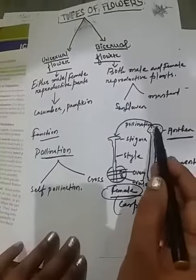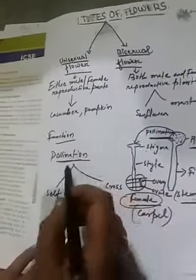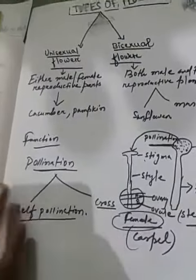The transfer of pollen grains from anther to stigma is called pollination. This is given in your page number 8. There are two types of pollination: self pollination and cross pollination.